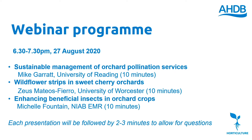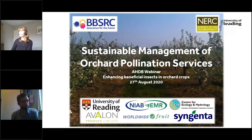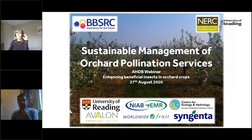Mike Garrett is a researcher based at the Centre for Agro-Environmental Research at the University of Reading. His research focuses on managing biodiversity in the farmed landscape to support sustainable crop production. He'll tell us about the role of pollinators for UK apples and how growers can improve fruit quality through pollinator management.